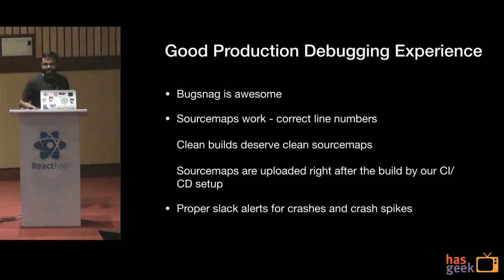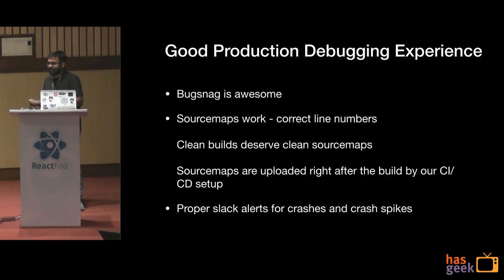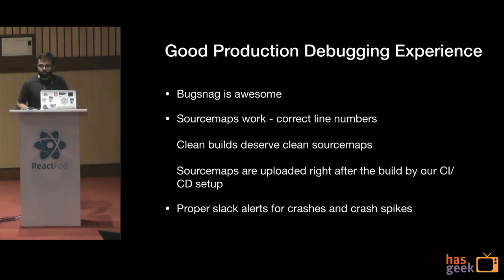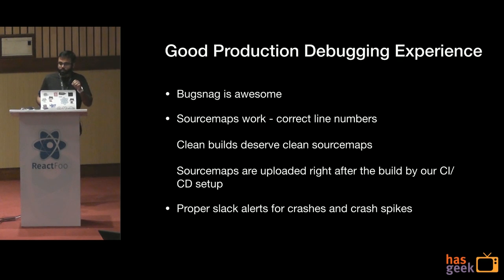There had to be a better way. As it turns out, Bugsnag is awesome — it's a brilliant platform for tracking crashes. Why it didn't work properly before was my own fault: my builds and source maps weren't clean. Clean builds deserve clean source maps. After setting up our CI/CD, I added a source map upload script which runs after every clean release. We also added Slack integrations on Bugsnag — each time there's a spike in crashes, we get Slack alerts.